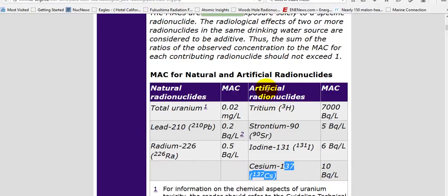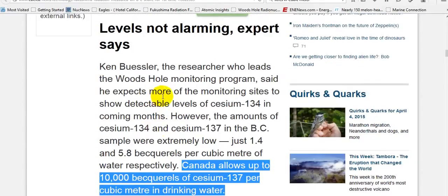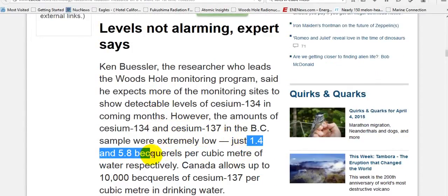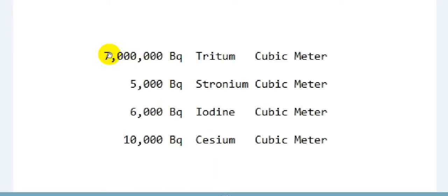They're artificial. They call them artificial, not man-made, but they're man-made in a chain reaction. 7,000 becquerels a liter. A liter. Back to Ken Buesler for a second. He found 1.4 to 5.0 becquerels per cubic meter.